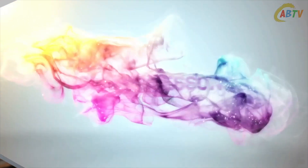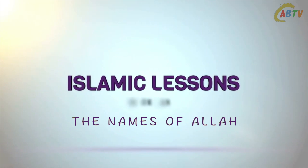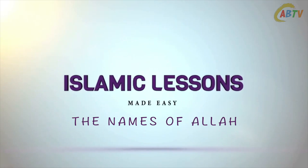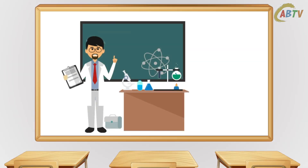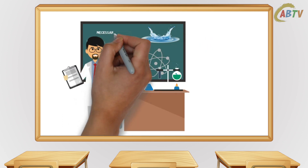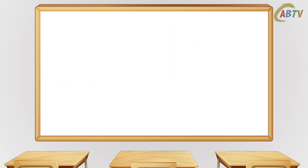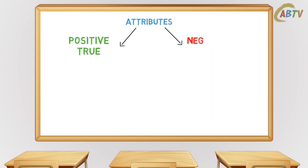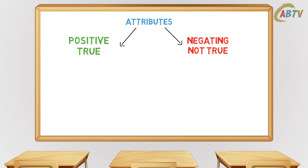Allah subhanahu wa ta'ala has described himself in the Holy Quran through his majestic names and attributes. In order to understand Tawheed clearly, it is important for us to study Allah's attributes. The attributes of Allah have been divided into two categories. Let us watch this video to understand this better. So far we have proved logically that there must be a necessary existence which began everything else, and we have also distinguished it from its creation. There are positive attributes which are true, and some are negating attributes which are not true for a necessary existence.